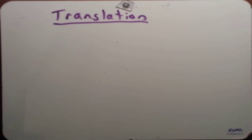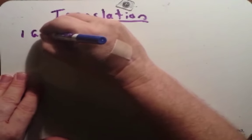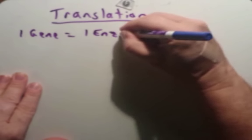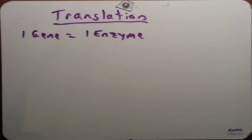We touched on a concept when we were talking about transcription: this idea of one gene equals one enzyme. This was a hypothesis first set up by the scientists Beadle and Tatum. They did a lot of experiments to show that in their organism, Neurospora, a kind of fungus, one gene is equal to one enzyme. By and large this hypothesis holds up, but there are some important exceptions.